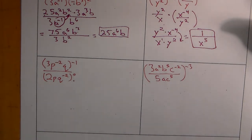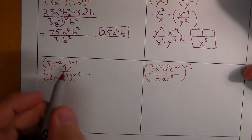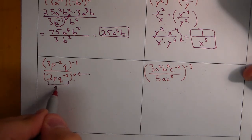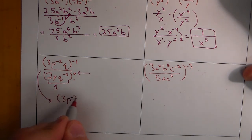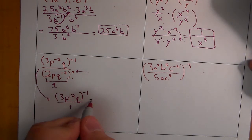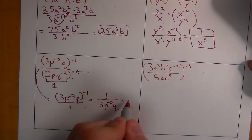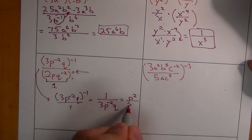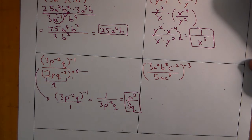The next one has negative exponents inside and outside, but anything to the zero power becomes 1. So the whole fraction with the zero exponent becomes 1, leaving 3p to the negative 2 q to the negative 1 over 1. Take the reciprocal to make the exponents positive: 3p to the negative 2 q. The p squared moves up, and 3q stays on the bottom. The answer is p squared over 3q.